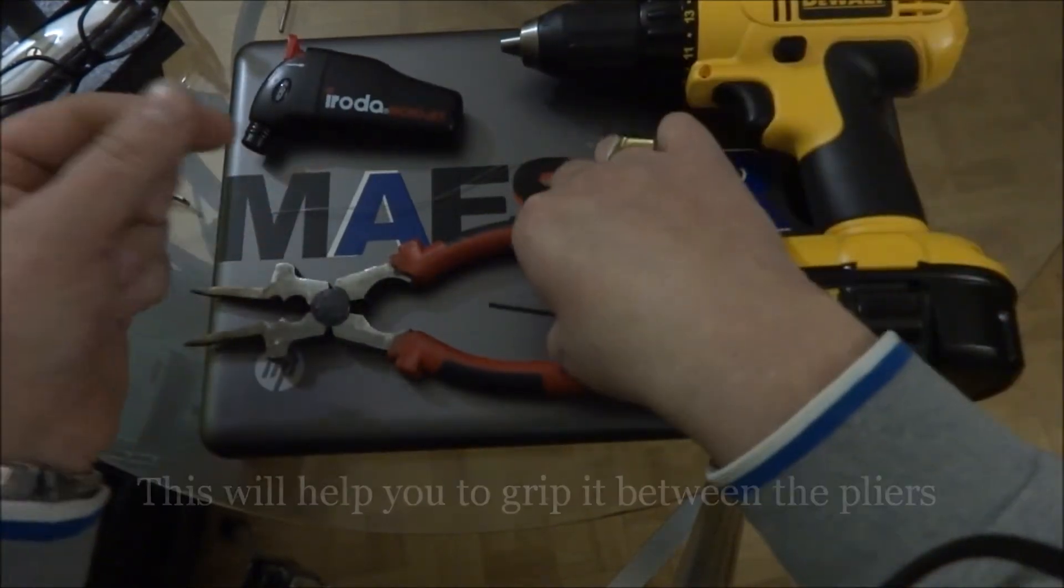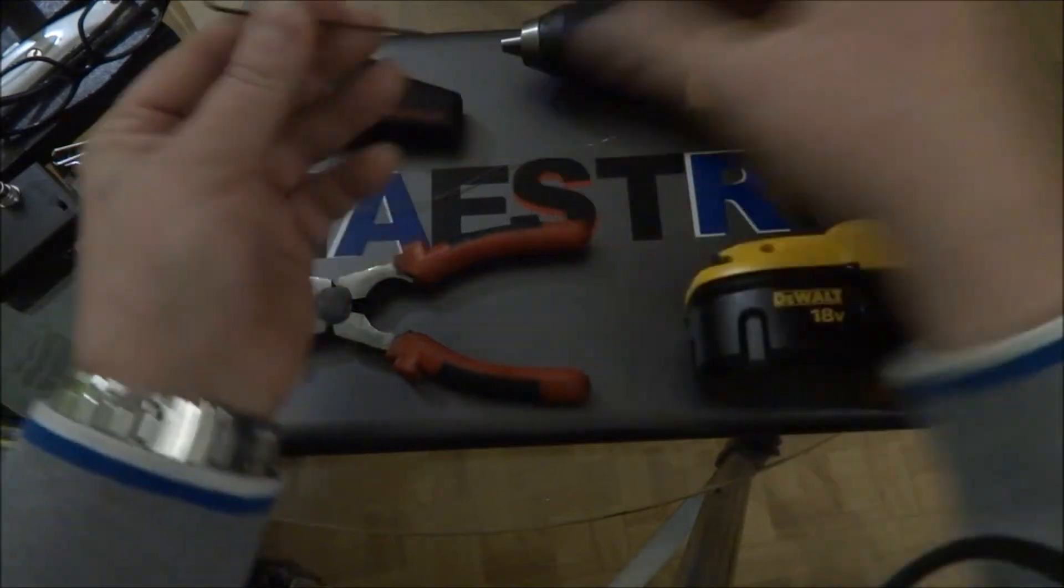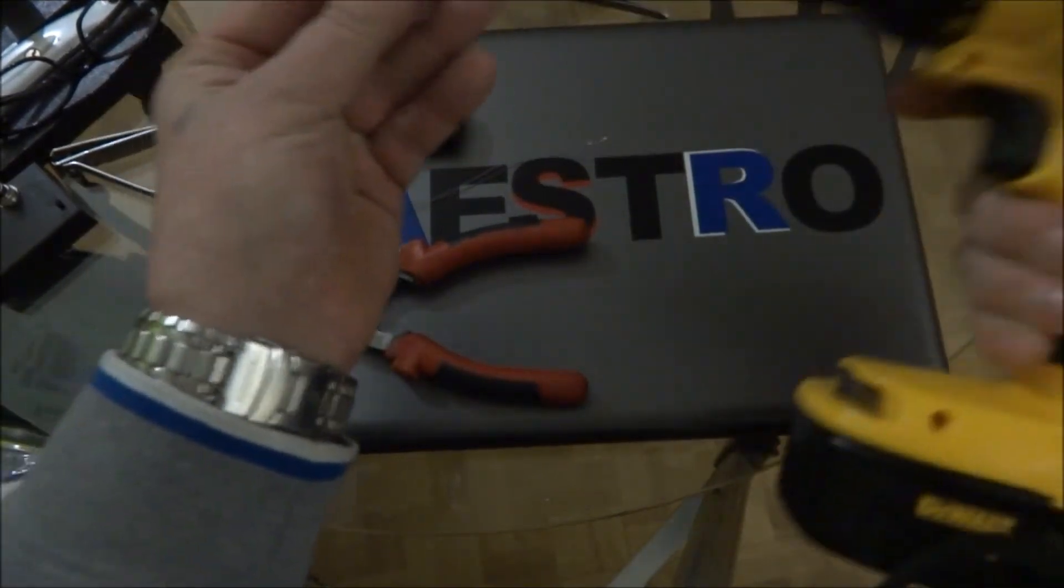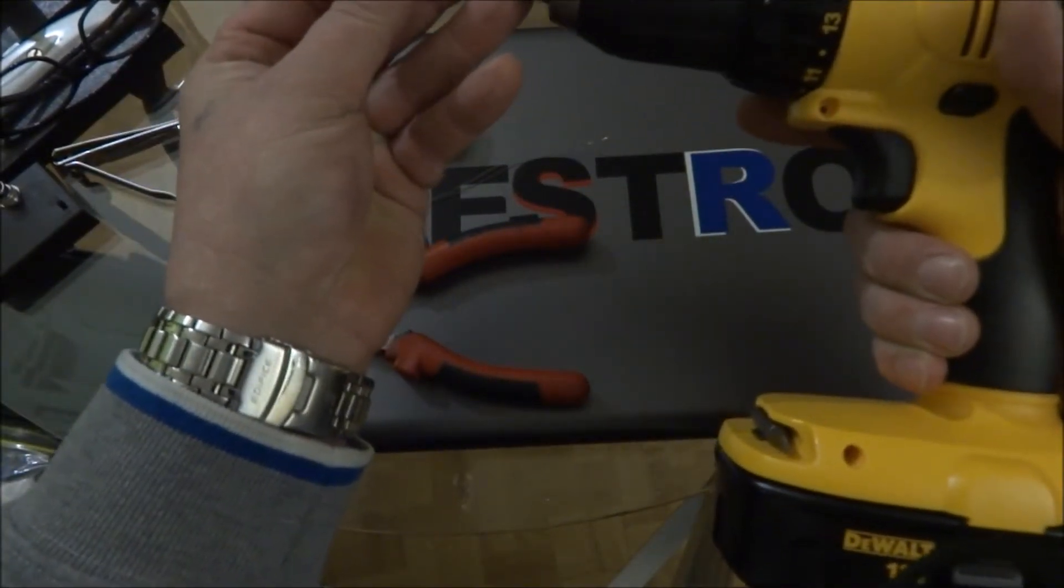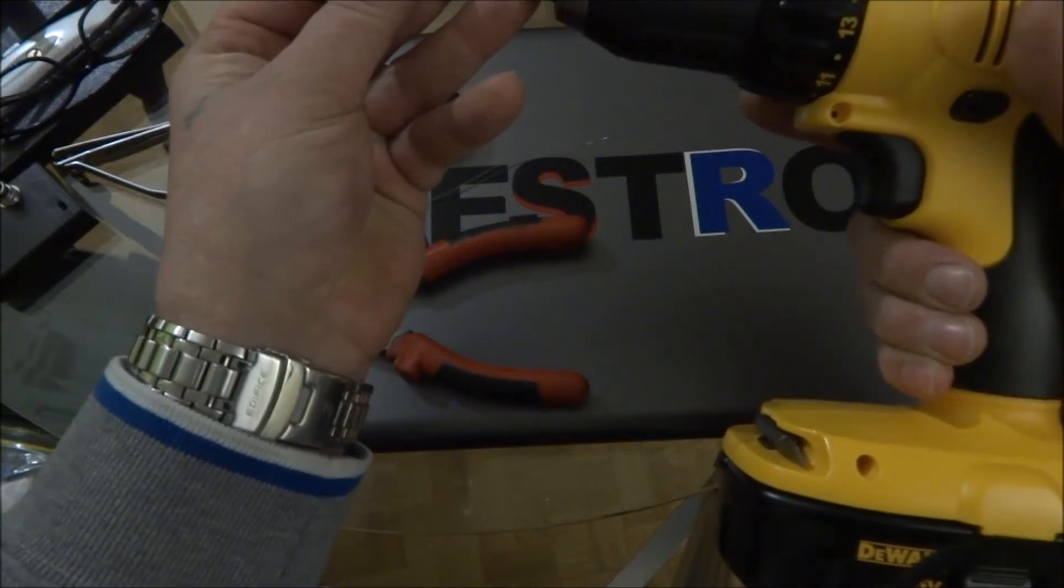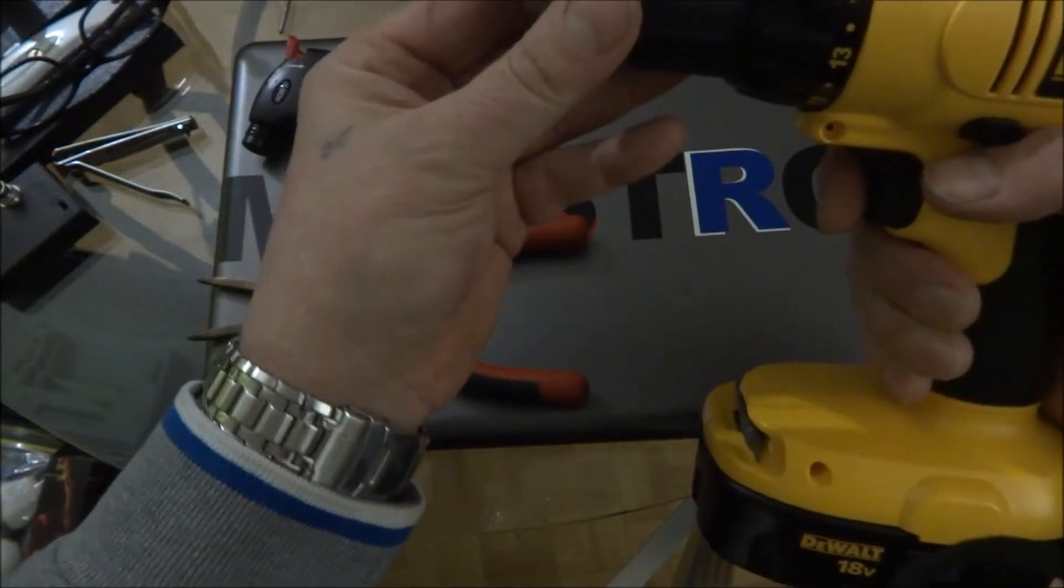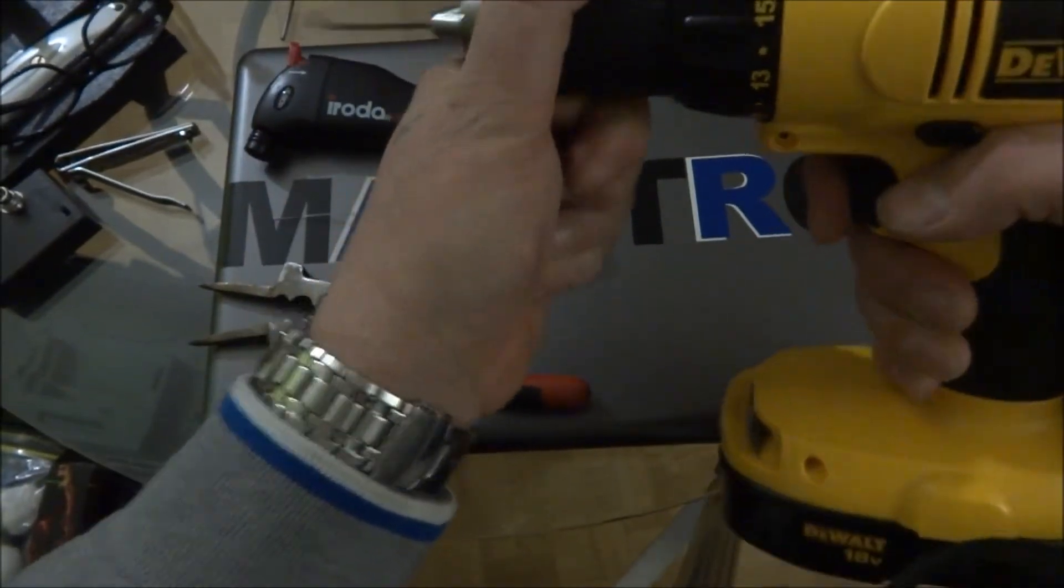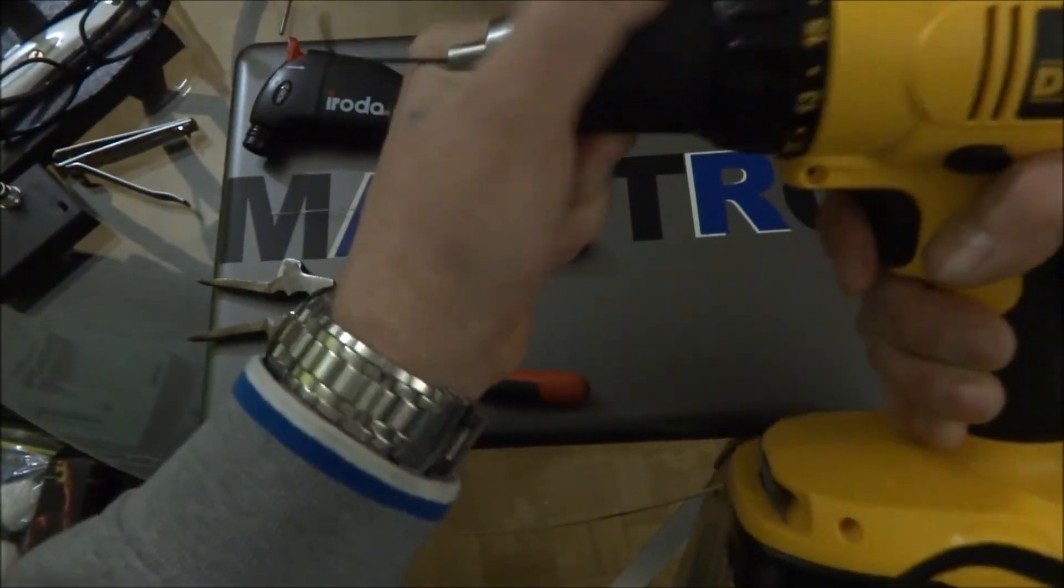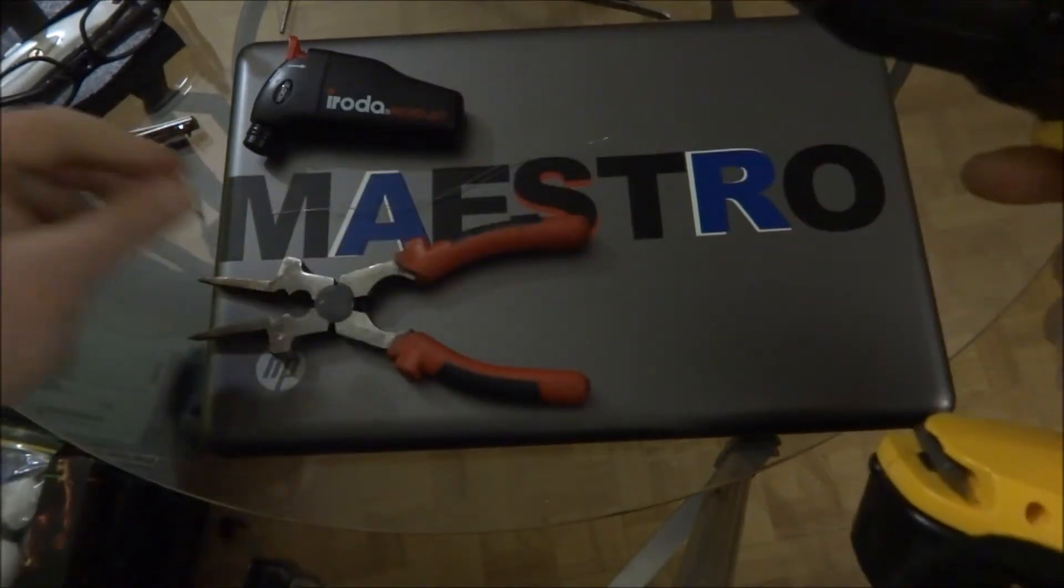Set that down, then you need to take the Allen wrench you have and put it into your drill, into the chuck. Good luck chuck. Tighten it in there. There we go.